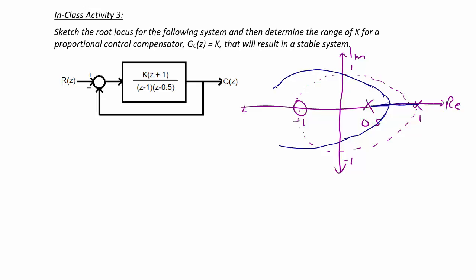And then over here, they're going to come back together and one's going to go to the zero and the other's going to go to a zero at negative infinity. So this is as k approaches infinity.